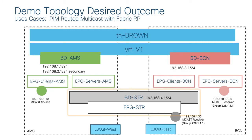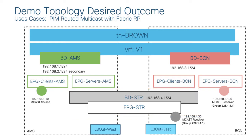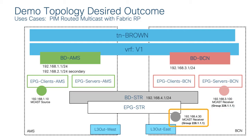For the last example, I'll keep my stretched BD and EPG and show layer three routed multicast using PIM with fabric rendezvous point. There's a new endpoint at 192.168.1.10 in EPG Clients Amsterdam — that's my multicast source. In EPG Servers Barcelona on the right, there's a multicast receiver on an entirely different network to demonstrate the routed part. My guy at 192.168.4.30 in the stretched EPG will also act as a regular multicast receiver, showing fabric RP delivering traffic to all listeners.